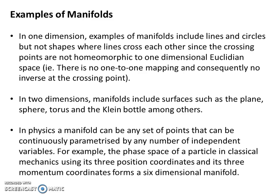Some examples of manifolds: in one dimension you have lines and circles, but not shapes where lines cross each other, since crossing points are not homeomorphic to one-dimensional Euclidean space — there is no one-to-one mapping and consequently no inverse at the crossing point. In two dimensions, manifolds include surfaces such as the plane, sphere, torus, and Klein bottle. In physics, a manifold can be any set of points continuously parameterized by independent variables — for example, the phase space of a particle using three position coordinates and three momentum coordinates forms a six-dimensional manifold.